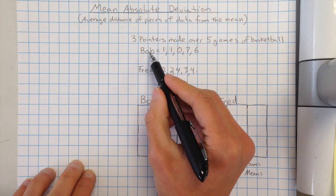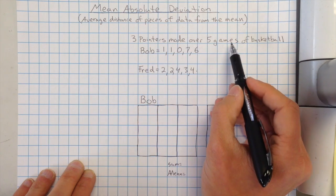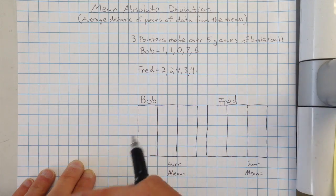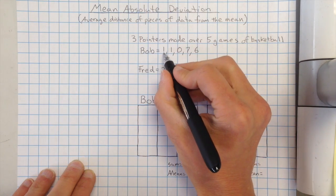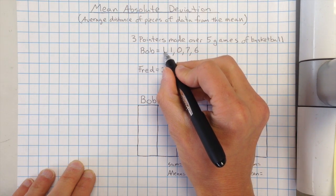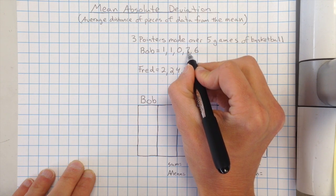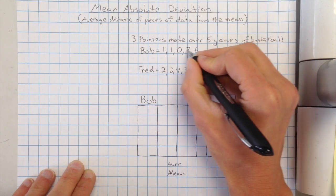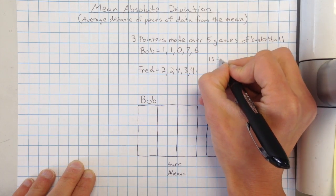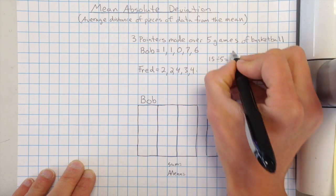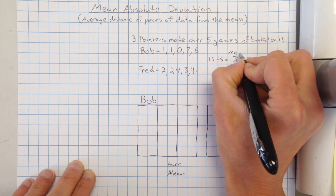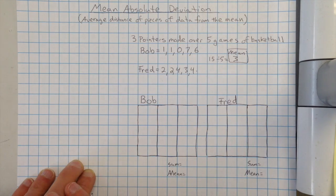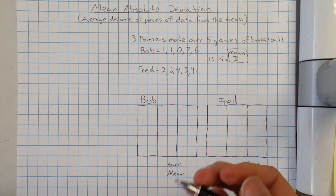So let's say we had two people, Bob and Fred, and they were doing three-pointers over five games of basketball. Let's say we wanted to take that data and make it a little bit more concise and just find out the mean for each person. So to figure out the mean for each person, I'd have one plus one is two, plus seven is nine, plus six is fifteen. So the sum is fifteen, and then we would divide that over five pieces equals three. So that means the average, or the mean, for Bob is he made three points.